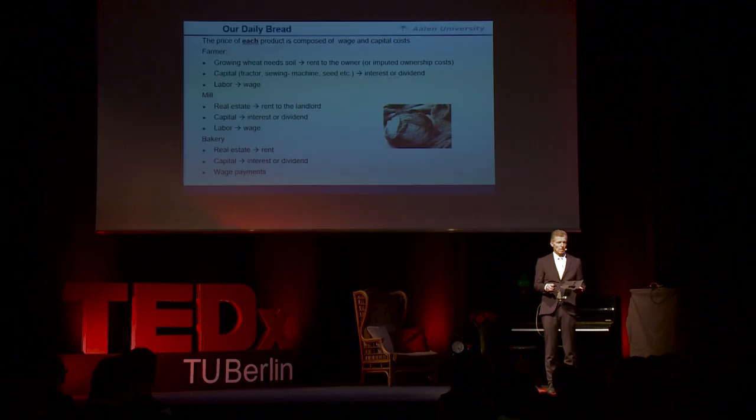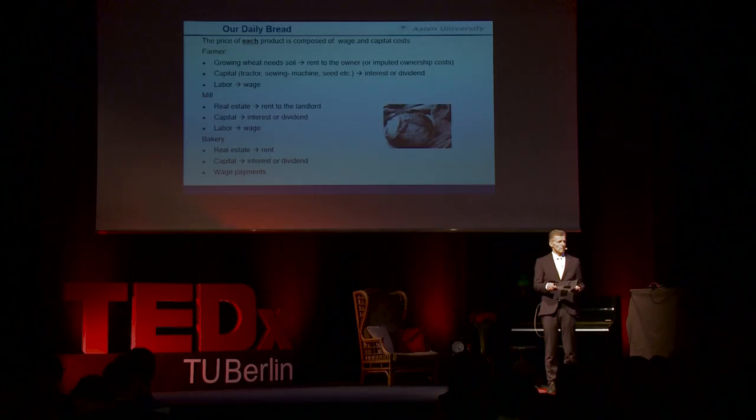First part: who's paying whom in everyday transactions? Let's take our daily bread. The price of each product and service that we buy is composed of two cost components, which is labor costs and capital costs.